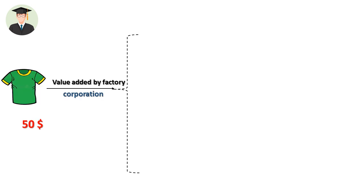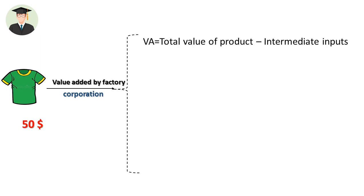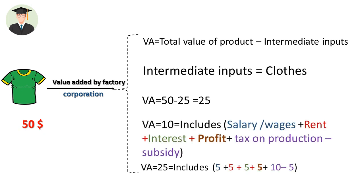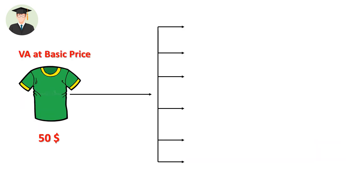Clothes are used as an intermediate input for producing T-shirts. To calculate the value added of this production, reduce the value of the intermediate inputs from the total value of production. The intermediate input is clothes. The total value of production is $50, intermediate input is $25, so value added is $25.